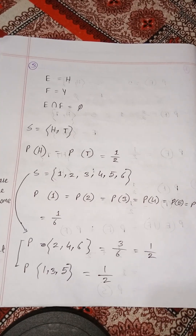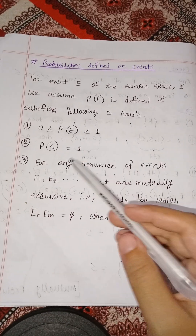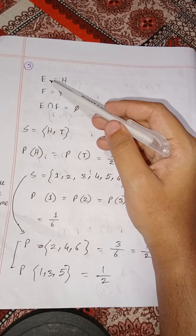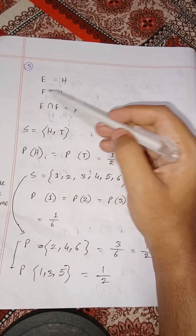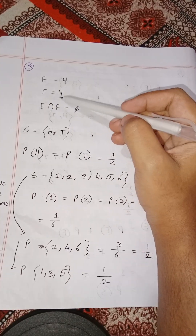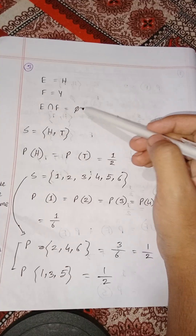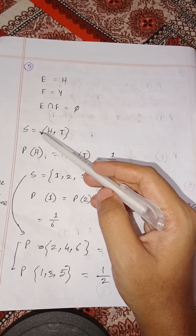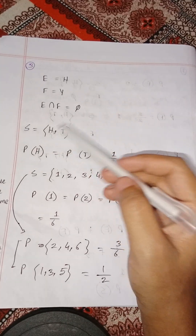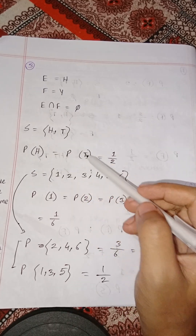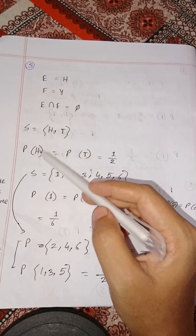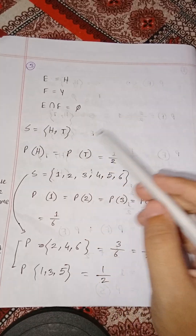Let's look at the third condition: for any sequence of mutually exclusive events. Suppose E = {H} and F = {T}. Their intersection is empty, so they are mutually exclusive. The probability P(E) = 1/2 and P(F) = 1/2. For the dice roll with outcomes 1 through 6, each outcome has probability 1/6.